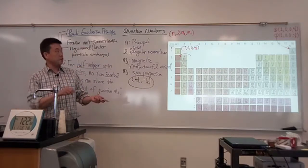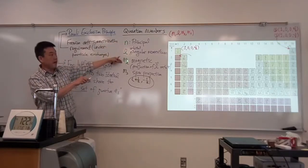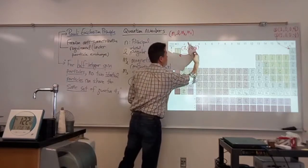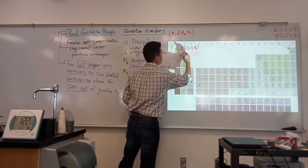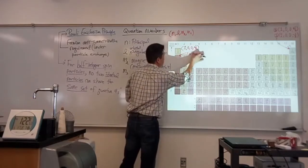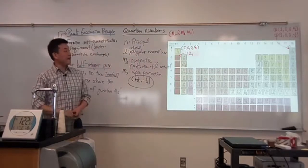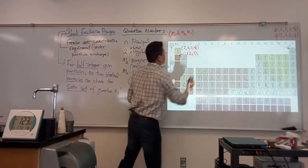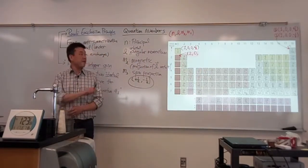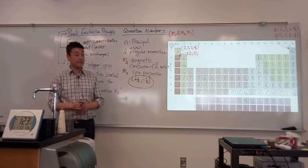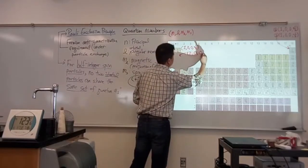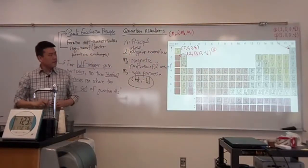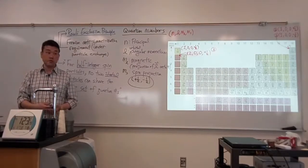This explains why starting with the third electron you are no longer on the first row — those two states with N=1, L=0, M_L=0 are now filled with both spin possibilities used up. So the third electron must go into the N=2 state. It starts out with L=0 because that gives slightly lower energy. So the third electron's state is 2, 0, 0, plus one-half.